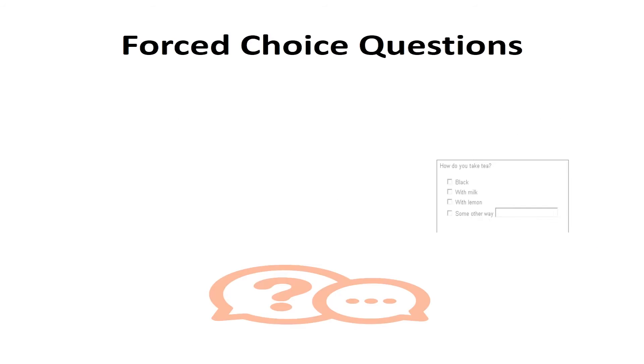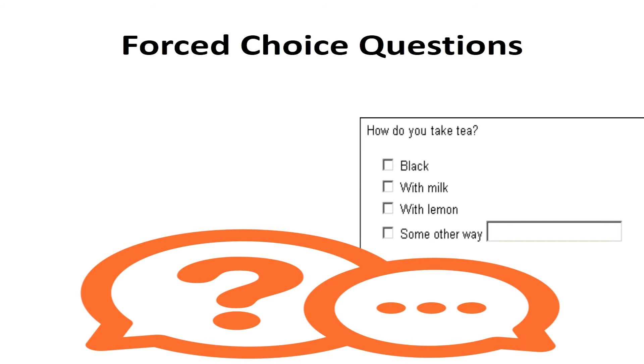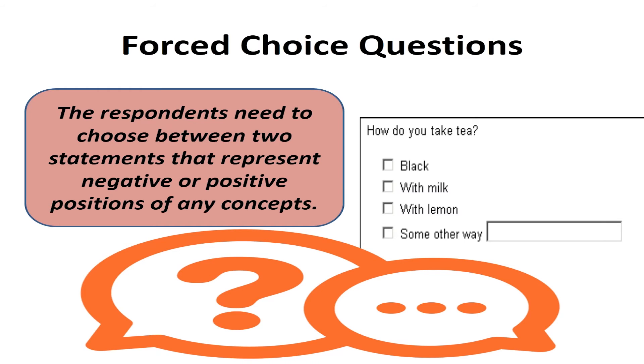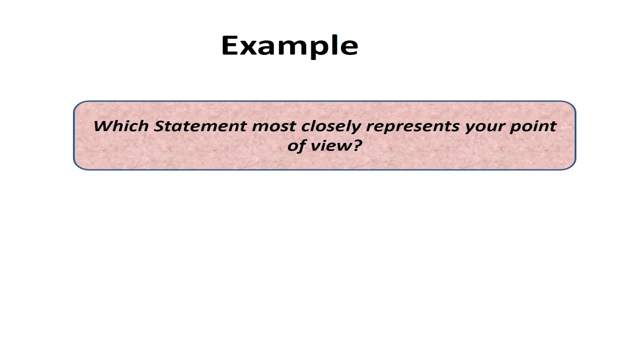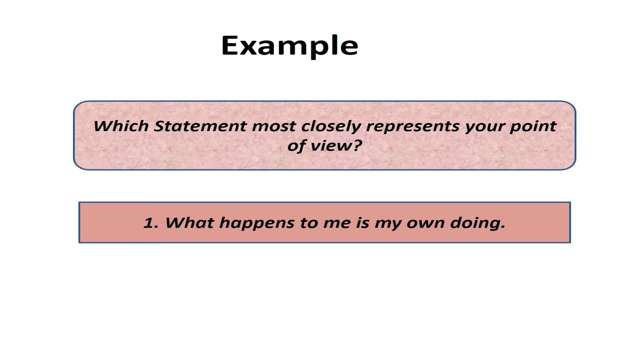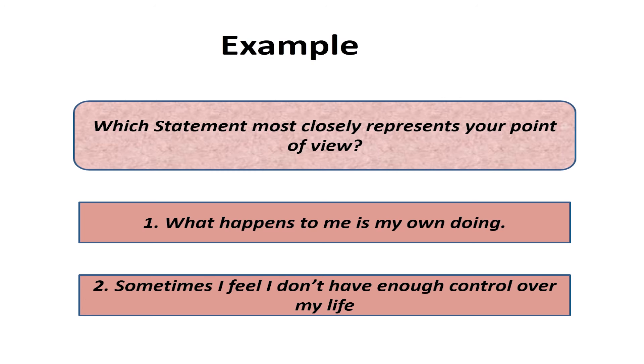The next type of questions are forced choice questions. Here, the respondents need to choose between two statements that represent negative or positive positions of any concepts. Many personality tests usually contain forced choice questions. For example, Which statement most closely represents your point of view? The first being, What happens to me is my own doing. Second is, Sometimes I feel I don't have enough control over my life.